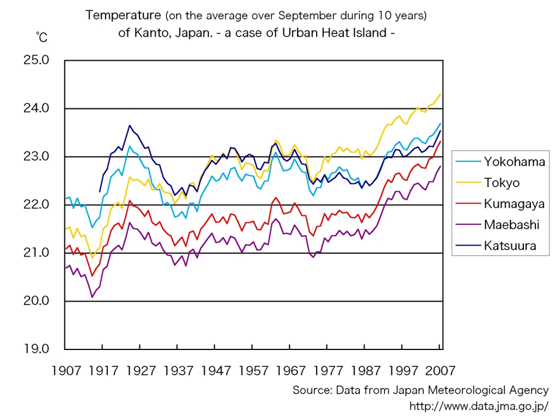Another major reason is the lack of evapotranspiration in urban areas. The U.S. Forest Service found in 2018 that cities in the United States are losing 36 million trees each year. With decreased vegetation, cities lose the shade and evaporative cooling effect of trees. Other causes are due to geometric effects: tall buildings provide multiple surfaces for the reflection and absorption of sunlight, increasing heating efficiency — this is called the urban canyon effect. Buildings also block wind, inhibiting cooling by convection and preventing pollutants from dissipating.